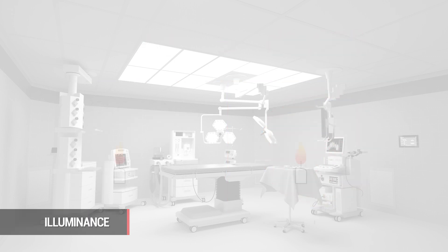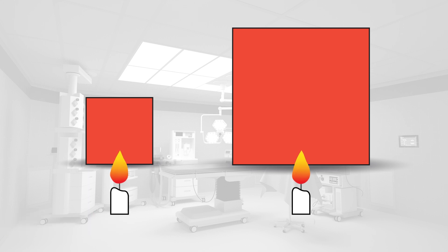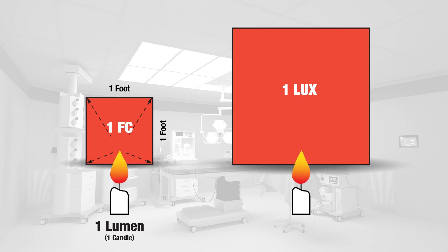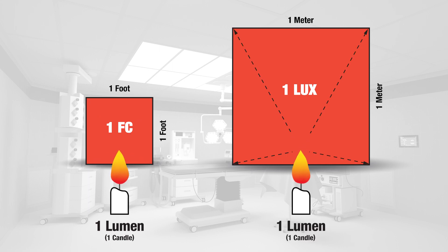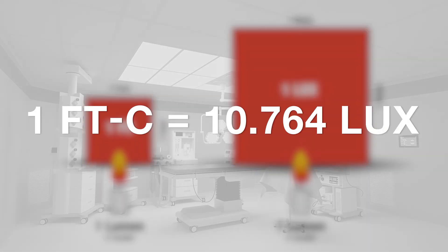Illuminance describes the quality of light that arrives at a particular surface, like an operating table or workstation. This is measured in foot candles or lux. A foot candle is one lumen per square foot, while lux is one lumen per square meter. One foot candle is equivalent to 10.764 lux.